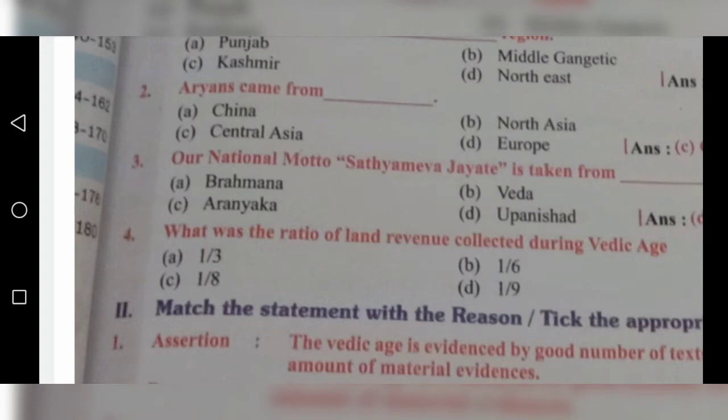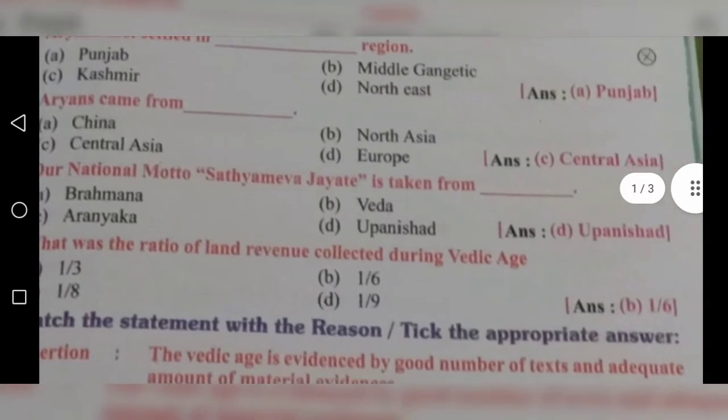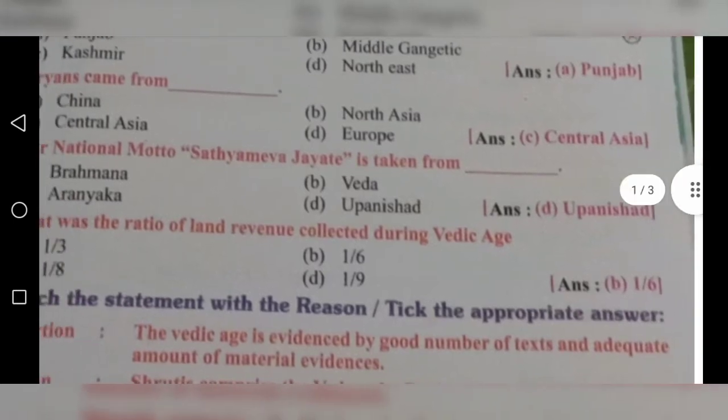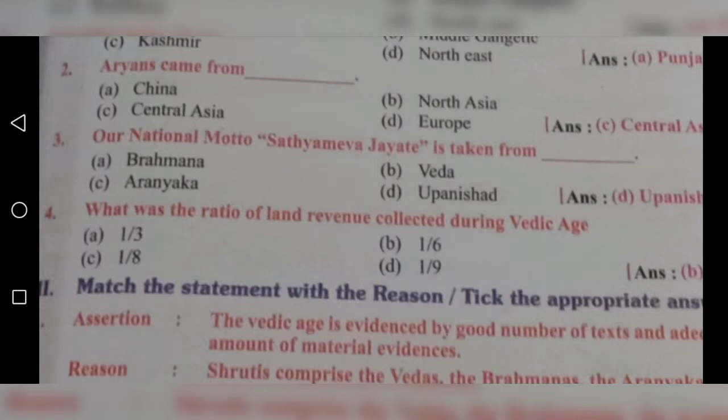Third question: Our national motto, Satyameva Jayate, is taken from which text? There are 4 options given. Option D is the correct answer. What is option D, children? Upanishad. So our national motto, Satyameva Jayate, is taken from the Upanishad.